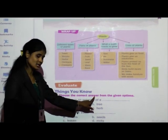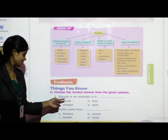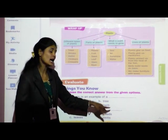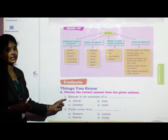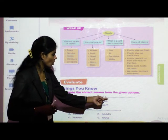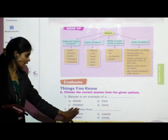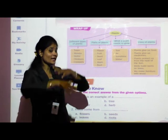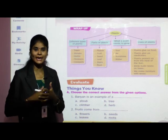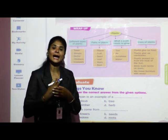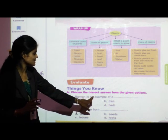Question A: Choose the correct answer from the given options. Four options are given — A, B, C, and D — and we have to choose the correct one. First question: Banyan is an example of what type of plant — shrub, tree, climber, or herb? Banyan is a very big tree. Plants which are big and tall are known as trees, so banyan is a tree.